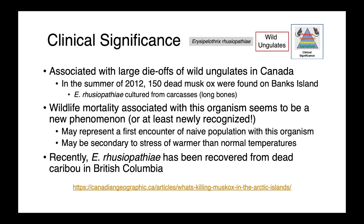Erysipelothrix rhusiopathiae also seems to be an emerging pathogen in wild ungulates in Canada. This story started in the summer of 2012 when 150 dead muskox — large Arctic ruminants — were found on Banks Island in the Canadian Arctic. Erysipelothrix rhusiopathiae was isolated from the long bones; the femur is one of the last places where we get post-mortem invasion of bacteria, so culturing Erysipelothrix from these sites was highly suggestive that this organism played a role in their deaths. This wildlife mortality seems to be a new phenomenon.